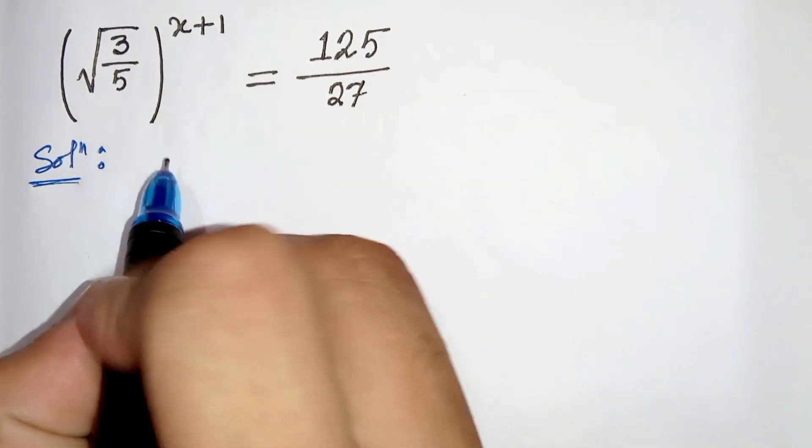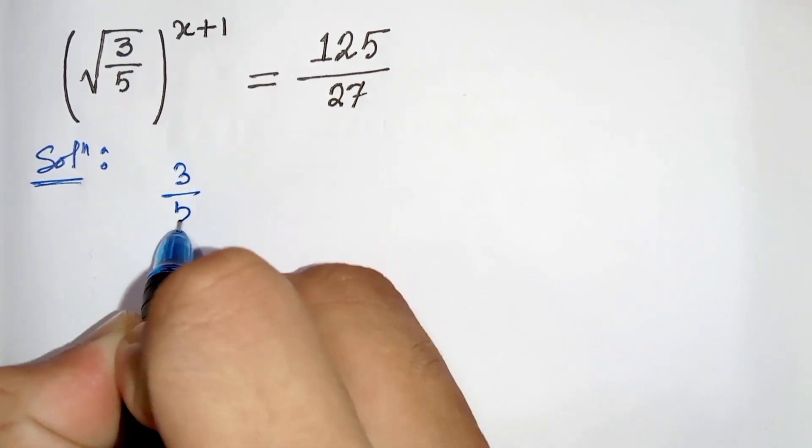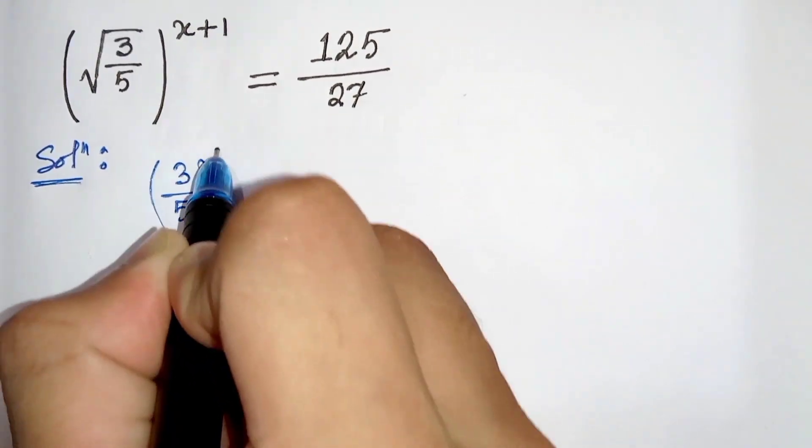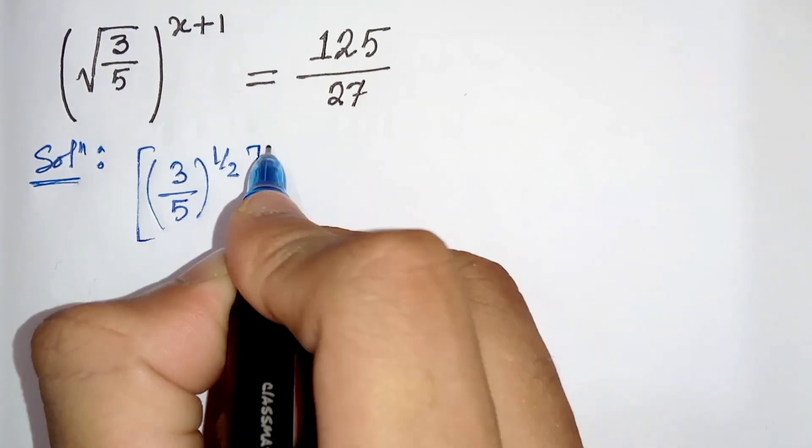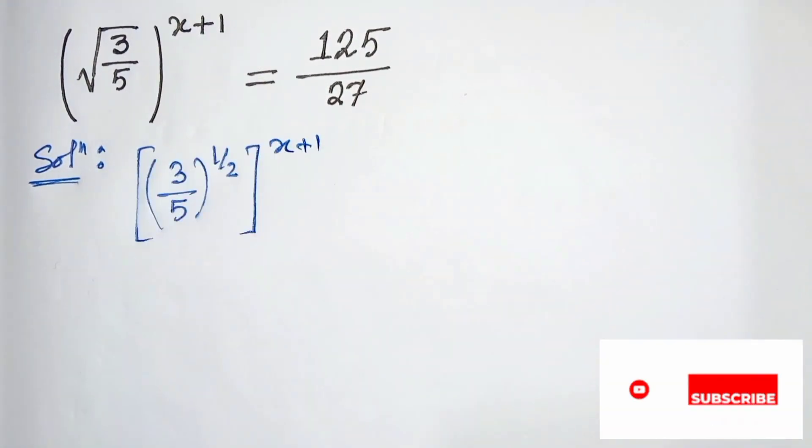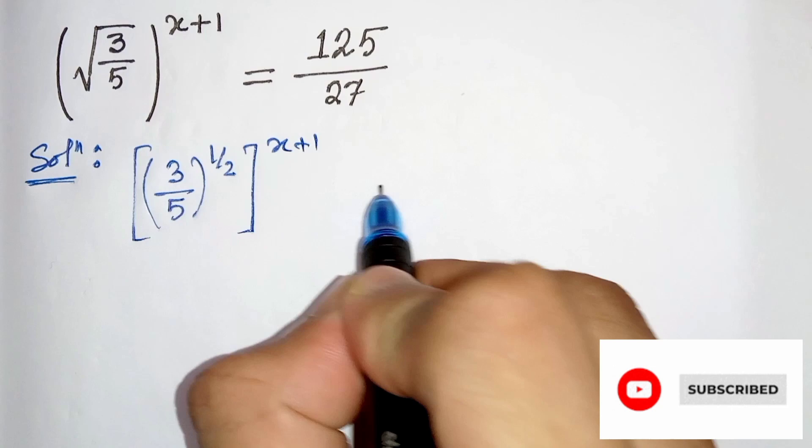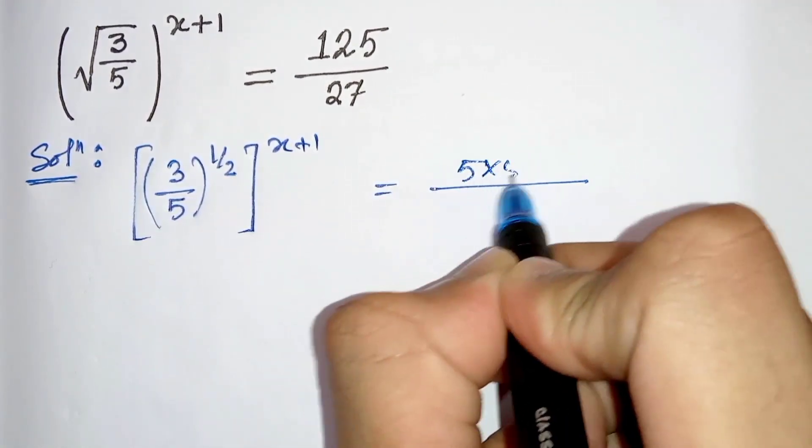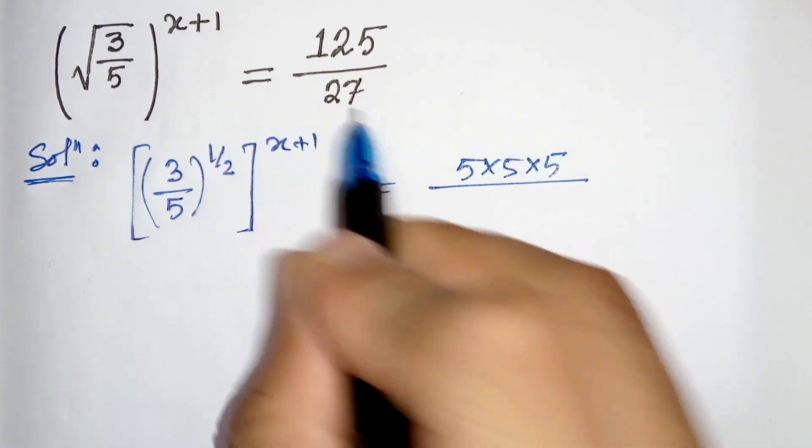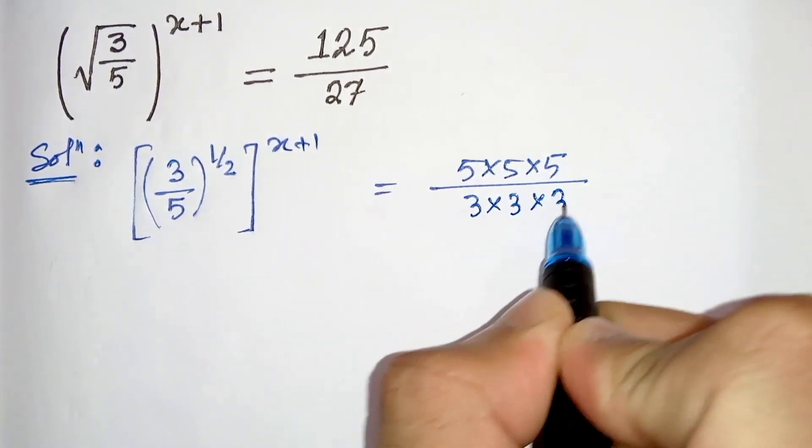First of all, we can write this root as power half, so 3 by 5 power half whole to the power x plus 1. From here we can write 125 as 5 times 5 times 5 and 27 as 3 times 3 times 3.